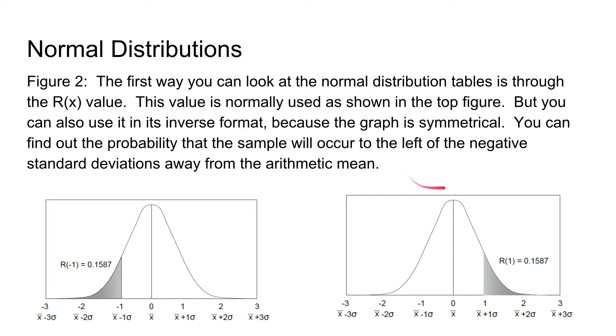So for a standard deviation of 1, an R value is equal to 0.1587. So this means that the percent of the population that is more than one standard deviation away from the average is equal to about 15.9 percent.